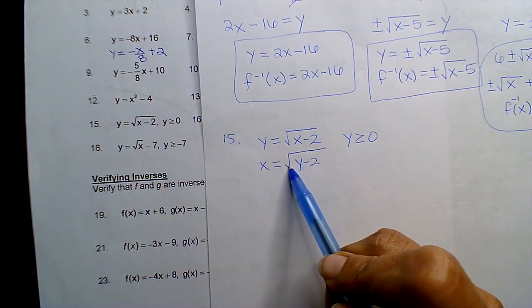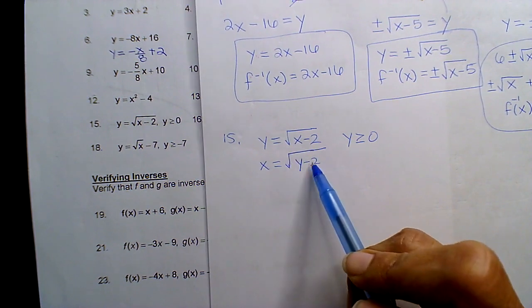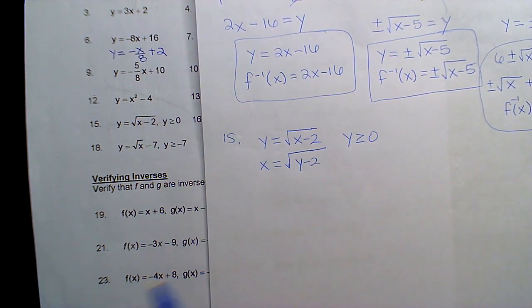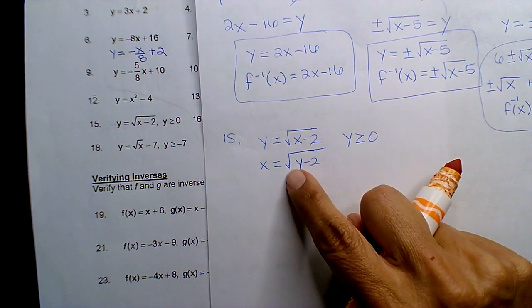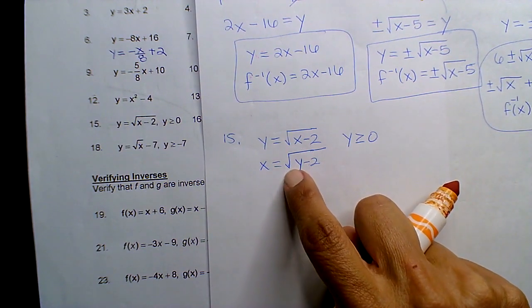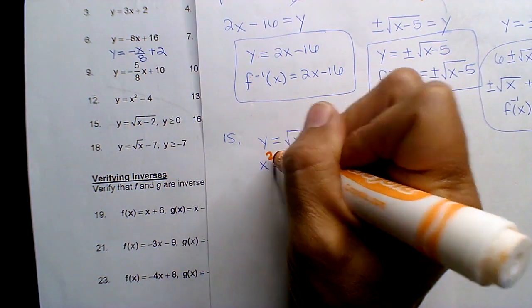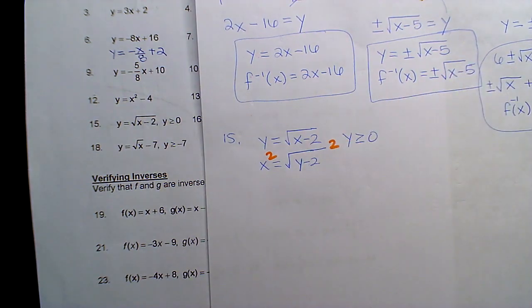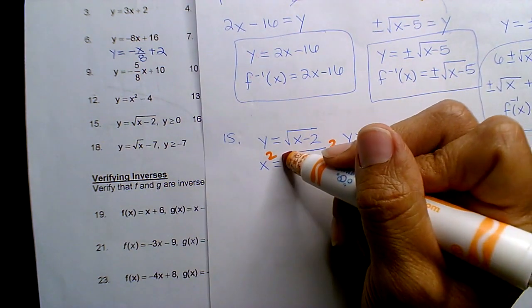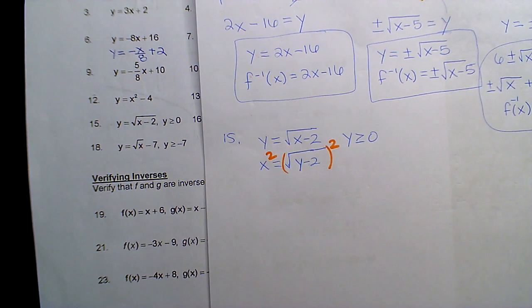Now what's the inverse operation to square rooting? Squaring, right. And although I didn't put parentheses around here, technically it's assumed you're squaring the entire radical.